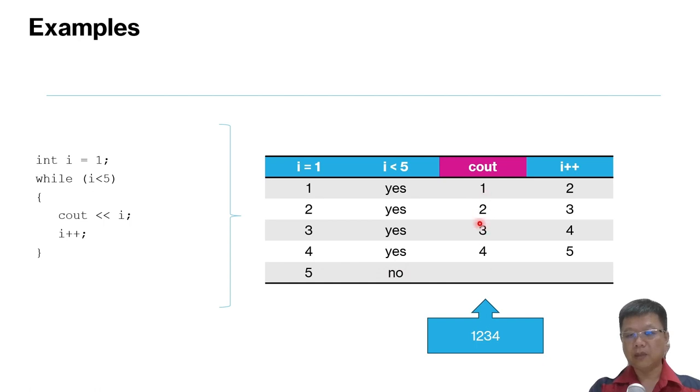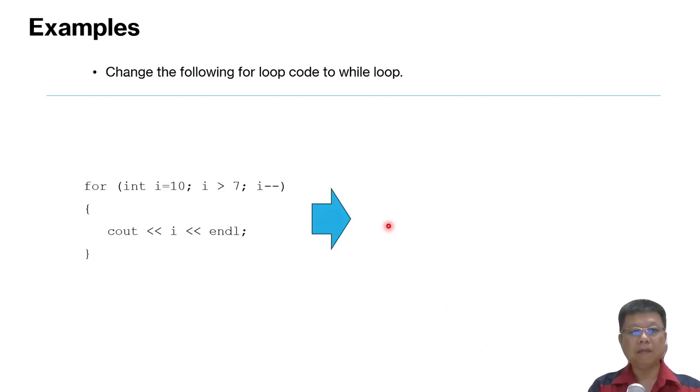So the output part is 1, 2, 3, 4. And you compare this example to the for loop example, they give the same output. So I hope you get this.